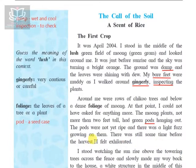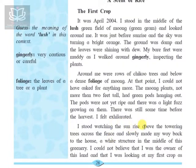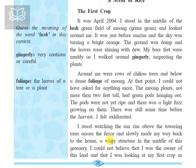There was still some time before the harvest. He felt exhilarated — very excited — because the pods were not yet ripe but the land was so wonderful. He stood watching the sunrise above the tower and trees across the fence, and slowly made his way back to the house — a white structure in the middle of greenery. He could not believe that he was the owner of this land and was looking at his first crop. Everywhere he looked, there were moong plants and tall trees.